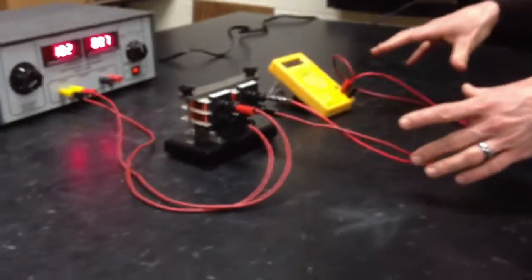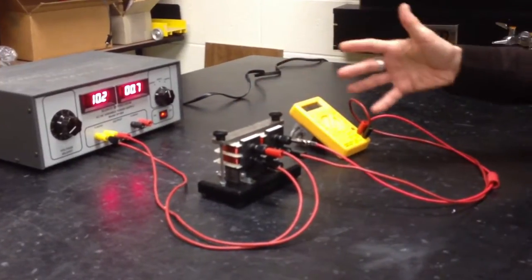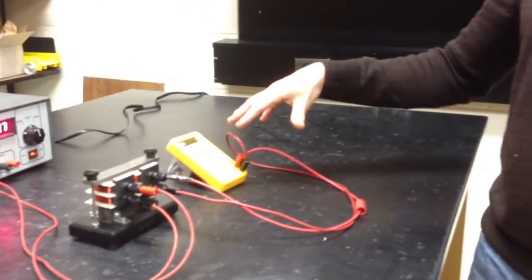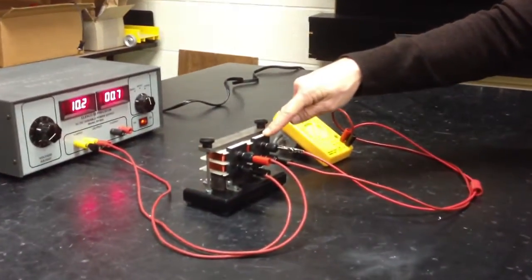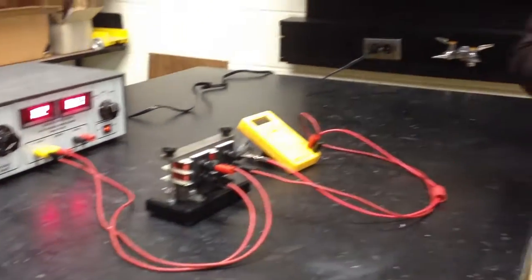So what you've just seen is an example of what we call, this is a step-down transformer. This device, with different numbers of turns of coil, transforms the voltage down, and what I showed you before, where this was the primary and the voltage went up, we call that a step-up transformer.